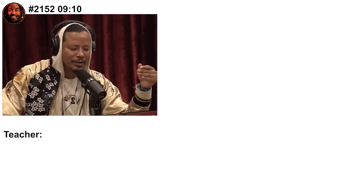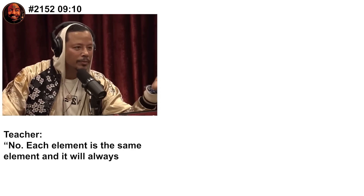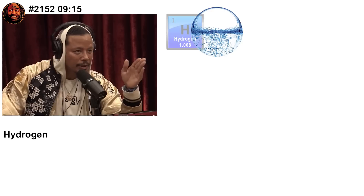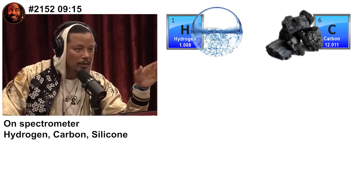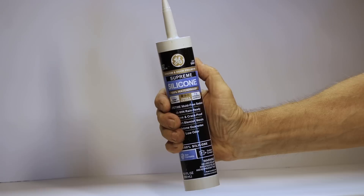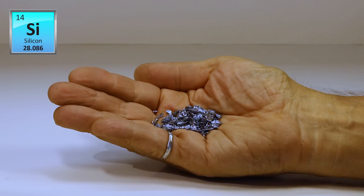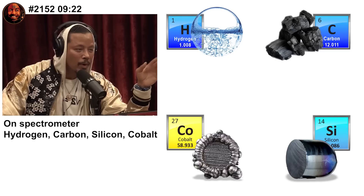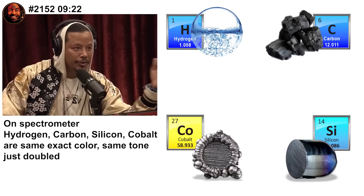I told the teacher and he was like, each element is the same element and it will always be that element. You don't see the relationship — the relationship between hydrogen on the spectrometer and carbon and silicon. This is silicon and this is silicone. Very different.